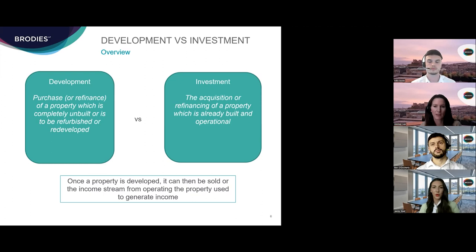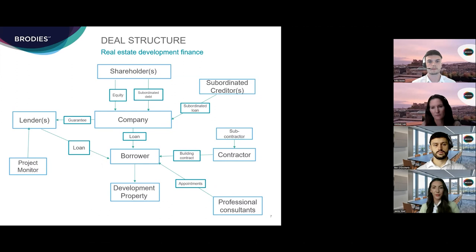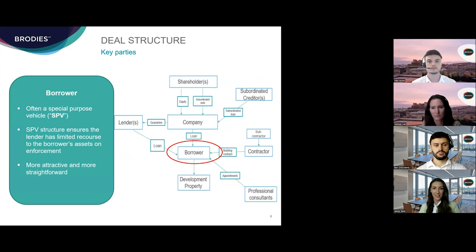For the purposes of this training session we'll be focusing on a real estate development finance structure. In a typical real estate development financing facility, the borrower is often a special purpose vehicle, also known as an SPV. The SPV does not hold any assets other than those which relate to the property, including title to the property. We have seen a trend towards using these clean off-the-shelf SPVs in real estate finance deals.